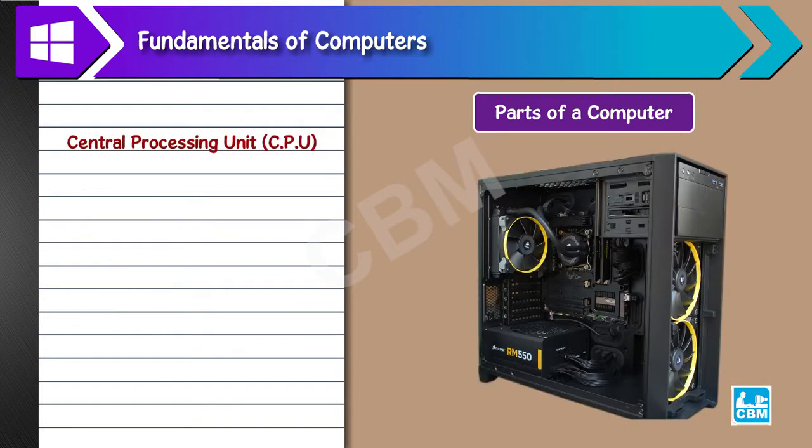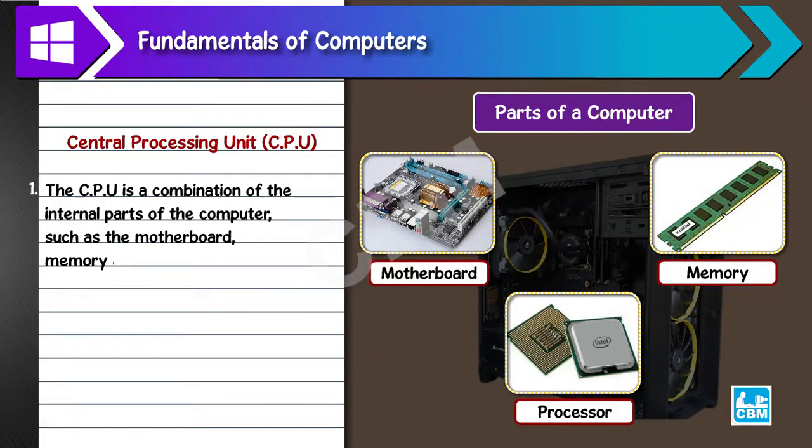Central Processing Unit (CPU): 1. The CPU is a combination of the internal parts of the computer, such as the motherboard, memory and processor. 2. It is often referred to as the brain of the computer.